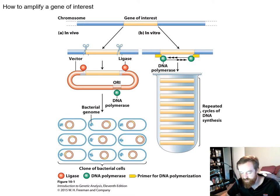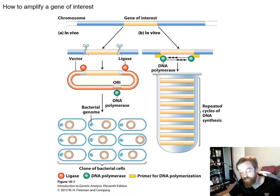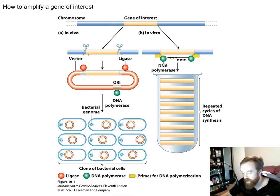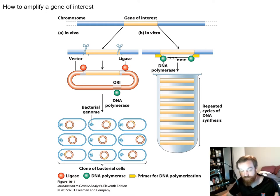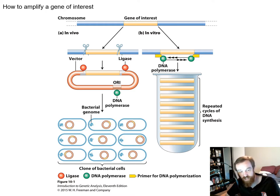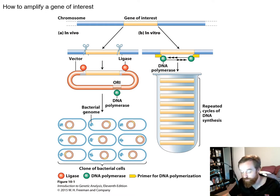One of the earliest and most key genetic manipulations is the idea that we can take a gene we're interested in and amplify it to make many copies. For example, if we're interested in a drought-resistance gene in plants, we could grow tons of plants and re-harvest the gene repeatedly, or we can remove that gene, purify it, and amplify it in a test tube. There are really two ways to amplify a gene.